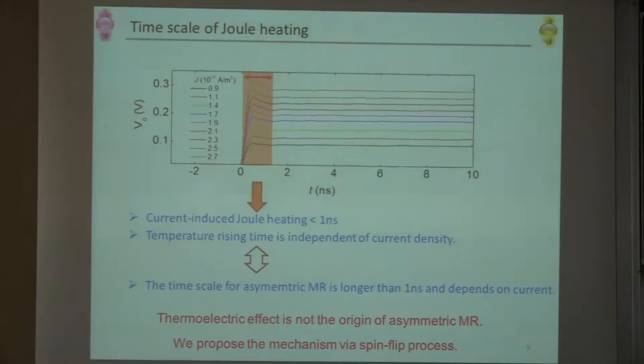Then we checked the heating. We just input our output voltage to the oscilloscope. Here you see the sudden increase of output voltage, and you see it's constant. This is just joule heating. So in this one nanosecond region, we got the joule heating of the sample, and the heat is saturated at some temperature. So it means heating time scale is less than one nanosecond, which is much smaller than this time scale of more than nanoseconds. So we can eliminate the thermal effects, if you like, a Nernst effect for this MR.